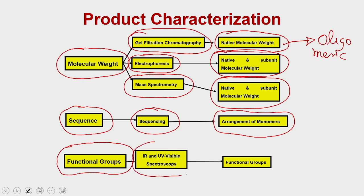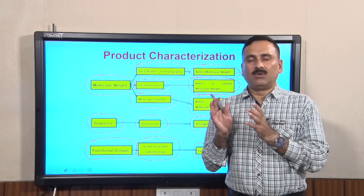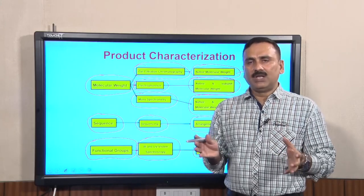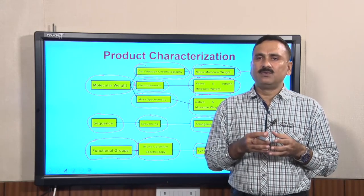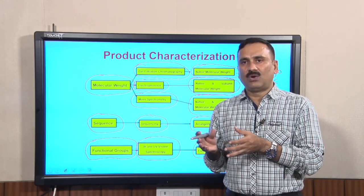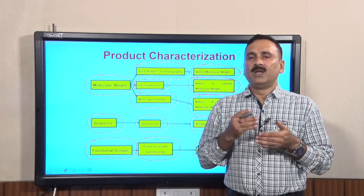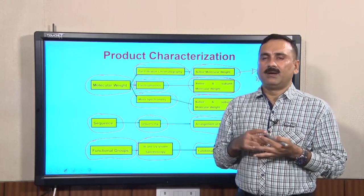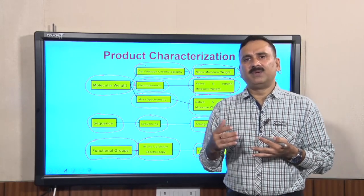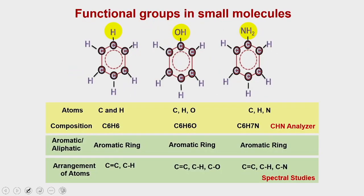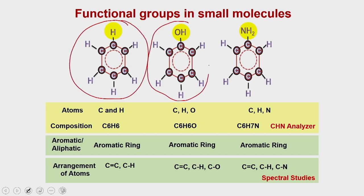We are going to discuss about IR as well as UV visible spectroscopy, which will give you the idea about the functional group and help in identifying a particular compound. But before getting into the details of identifying the functional group, you might have to do some periodic analysis of the compound. For this purpose we have taken three compounds: benzene, phenol, and aniline.